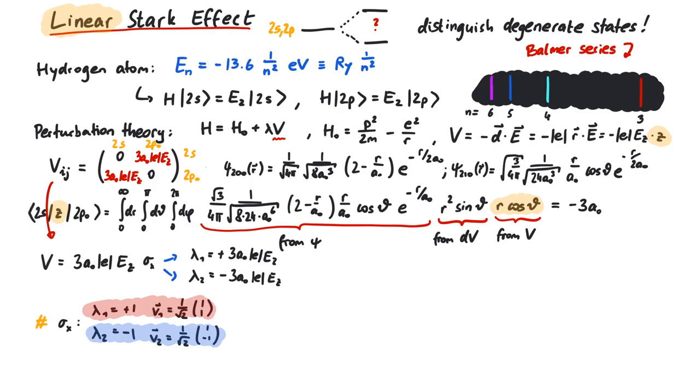So the new state with higher energy is 1 over the square root of 2, 2, 0, 0 plus 2, 1, 0. And the one with lower energy is 1 over square root of 2, 2, 0, 0 minus 2, 1, 0.